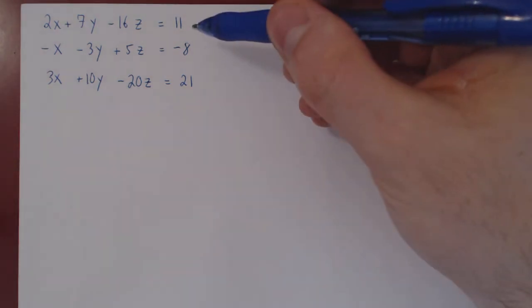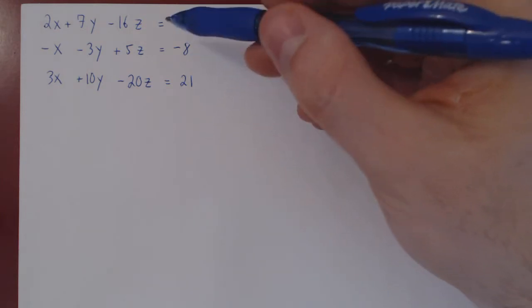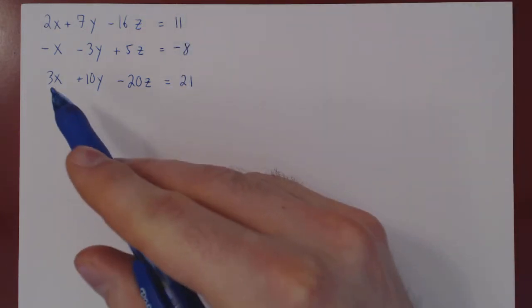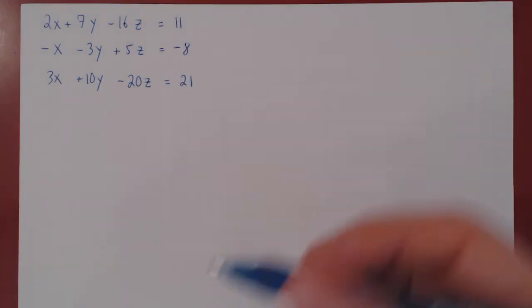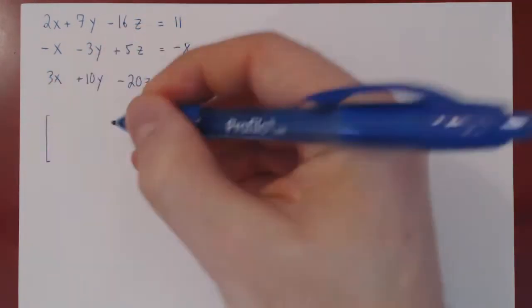Okay, so in this video we will solve the following linear system in three equations and three variables: x, y, z. As always, the first step is to construct the corresponding augmented matrix.